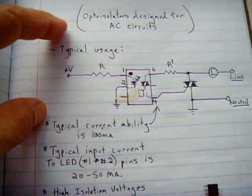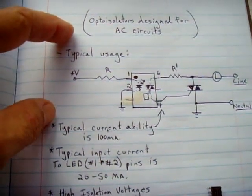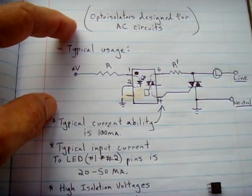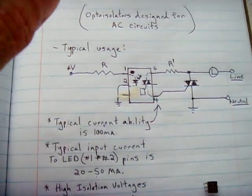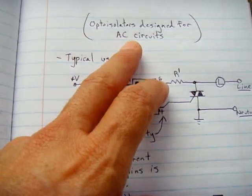This is another optoisolator video. You can go through my video list and find an older one for DC circuits. This one is for alternating current circuits.